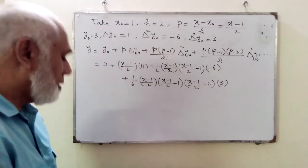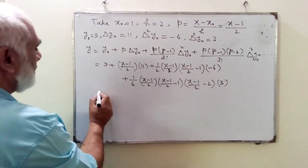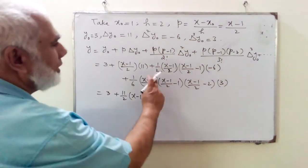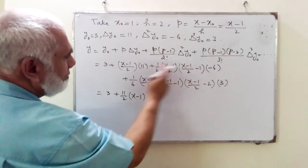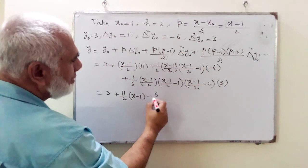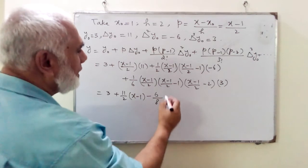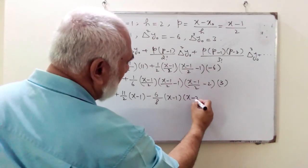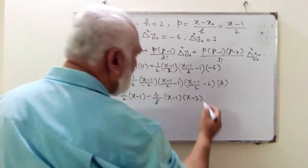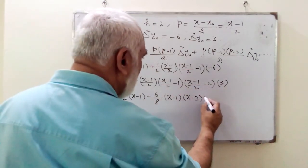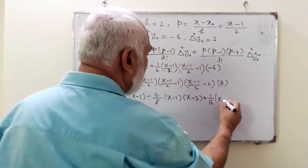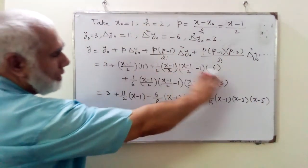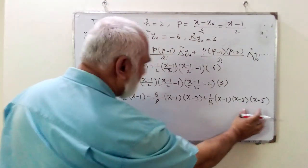On simplifying, we get: 3 + (11/2)(x−1). The second term gives −6 over 2·4, which yields (x+1)(x−3). The third term simplifies to (1/16)(x−1)(x−3)(x−5). After splitting these brackets, the final simplified polynomial can be obtained.